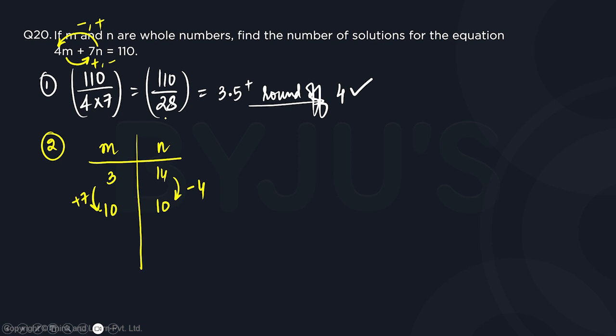You don't have to verify it. If you want, you can do it. But once you figure out that this works, it will always work. Next is m will again change by 7 and n will change by 4. So this will become 17 and 6. This is the next solution set. M will further change by 7, it will become 24, and n will change further by 4, it will become 2.